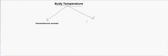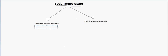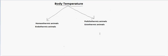Homeothermic animals and poikilothermic animals — those are two names. Now I will give you another set of names which may or may not represent the same thing, and many people ask whether they are the same thing or different things. So let me make another classification: endothermic animals and ectothermic animals.